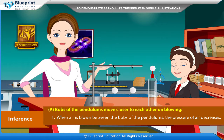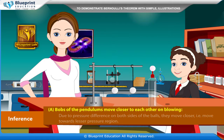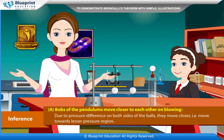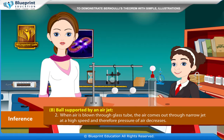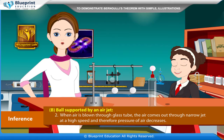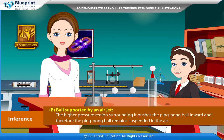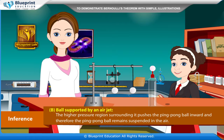Inference: when air is blown between the bobs of the pendulums, the pressure of air decreases. Due to pressure difference on both sides of the ball, they move closer — that is, they move towards the lesser pressure region. When air is blown through the glass tube, the air comes out through the narrow jet at high speed and therefore the pressure of air decreases. The higher pressure region surrounding it pushes the ping pong ball inward, and therefore the ping pong ball remains suspended in the air.